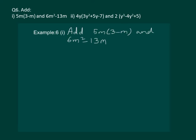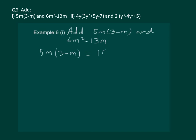Please read example 6 part 1. We have to add 5m multiplied by 3 minus m, and 6m squared minus 13m. Here we can see that the first expression has a product of a monomial with a binomial, while the second expression is a simple subtraction expression. So, let us solve the first expression. 5m multiplied by 3 minus m will give us 15m minus 5m squared.